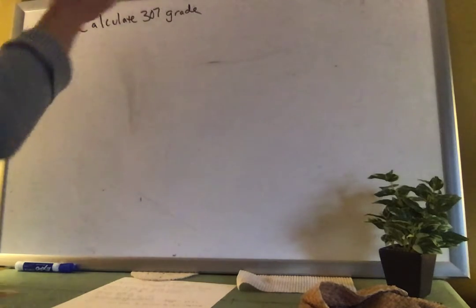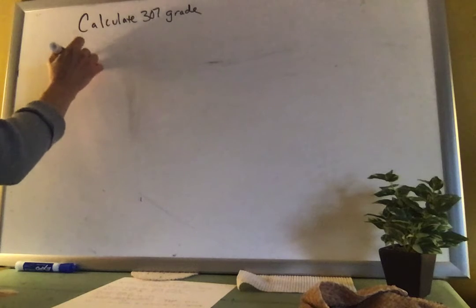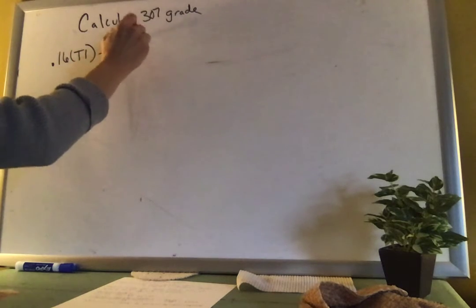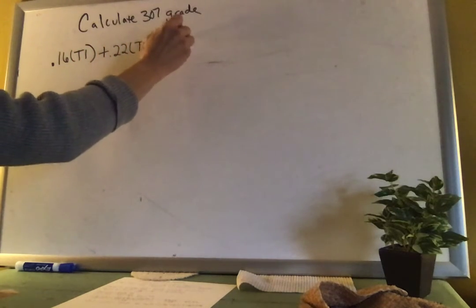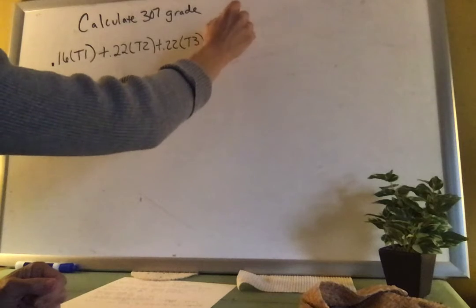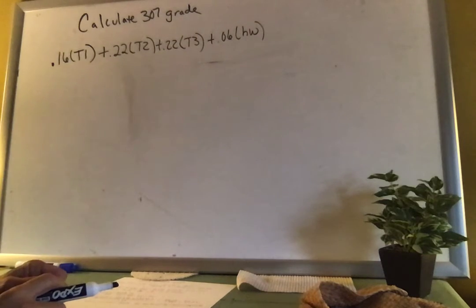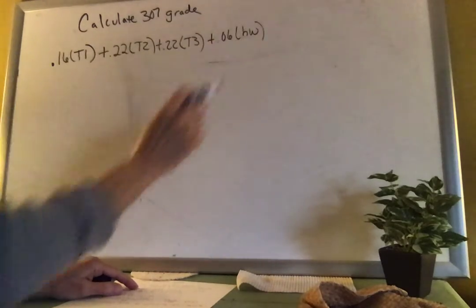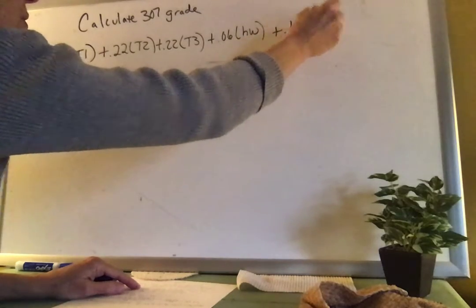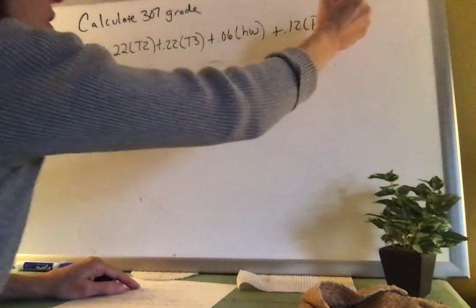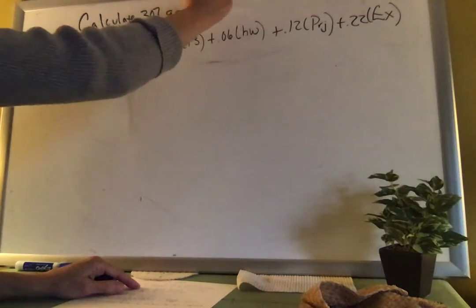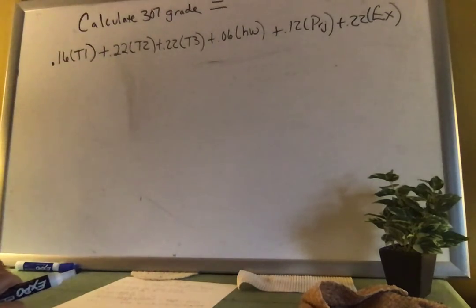So back to your grade. Test one is 16%, test two and test three are 22%. Your homework, and you can always just average the homework if you want, 6% for your homework. This really does keep going, 12% for the project and 22% for the exam. Maybe I can put an equals there. The 307 grade equals that formula, right?